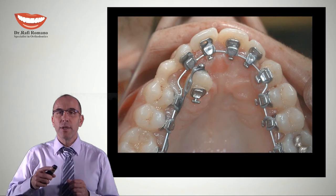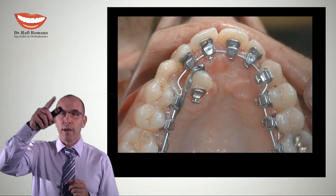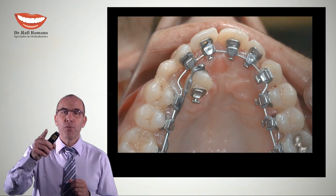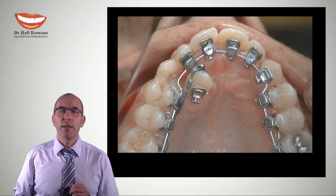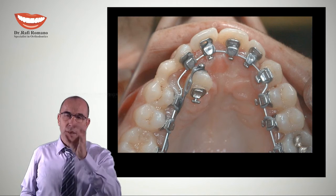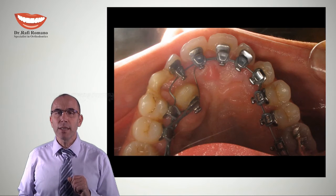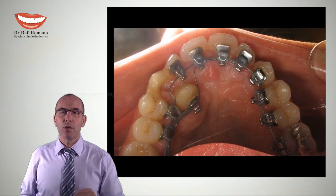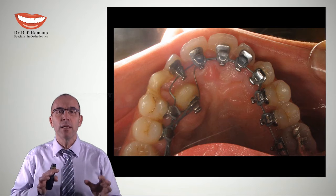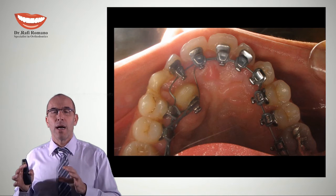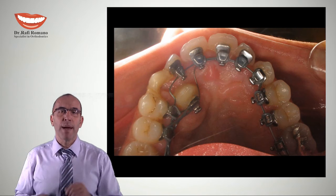As you can see here, we have an impacted canine. There's a wire connecting all the teeth, and a free elastic is rotating this cuspid around its axis. You can see two wires that we use to eliminate side effects on this impacted canine.